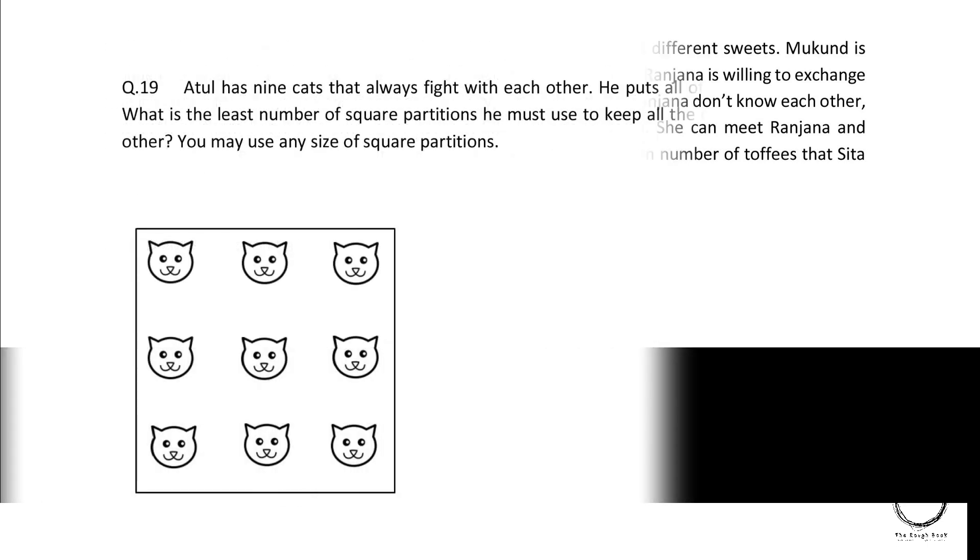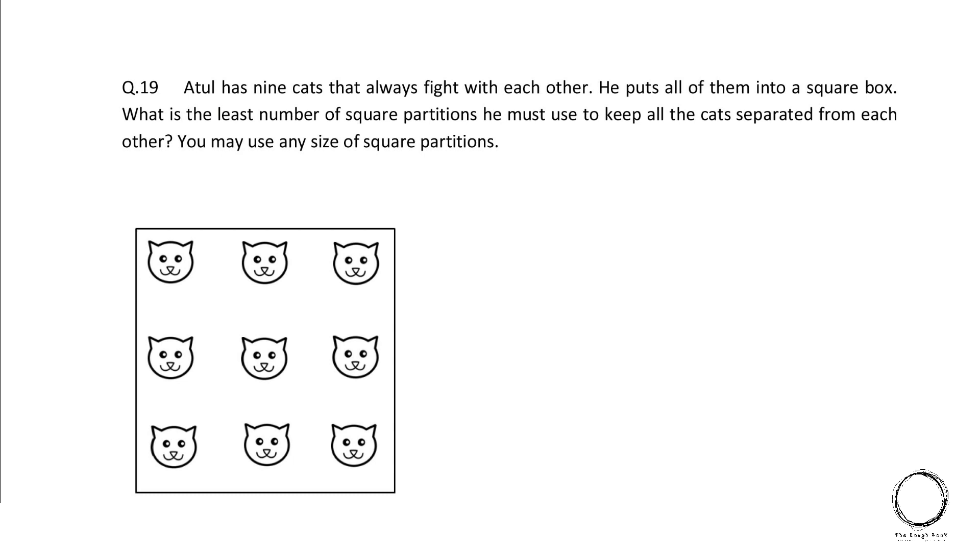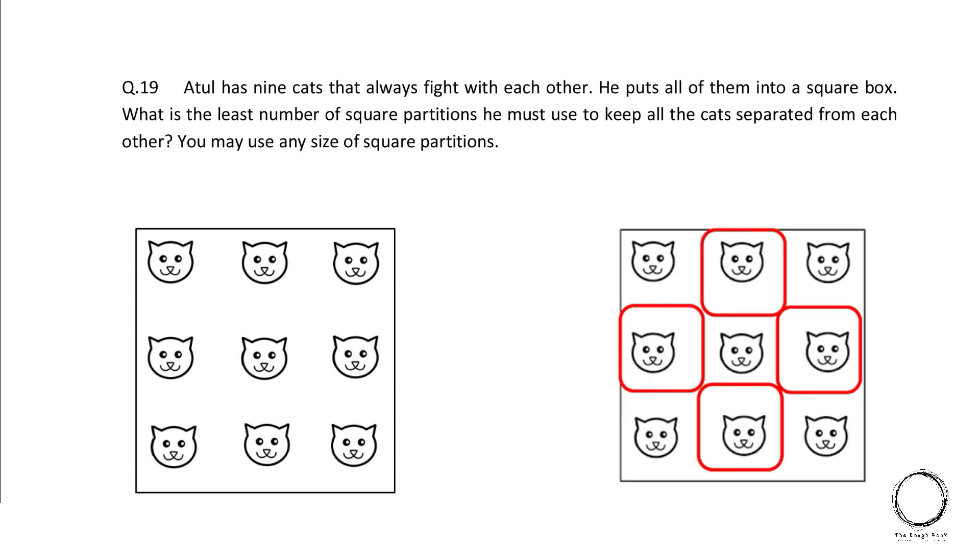Next, Atul has 9 cats that always fight with each other. He puts all of them into a square box. What is the least number of square partitions he must use to keep all the cats separated from each other? You may use any size of square partition. So the figure shows the possibilities and I think 4 squares would help keeping them separate. So the right answer is 4.